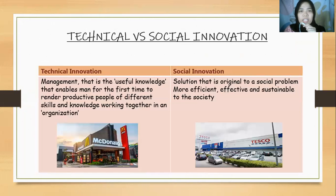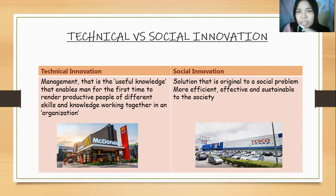Technical versus social innovation: technical innovation is management that uses knowledge enabling people with different skills and knowledge to work together productively in an organization. For example, like McDonald's. Social innovation is a solution that is original to a social problem — more efficient, effective, and sustainable to society.